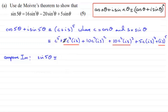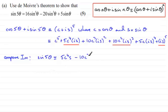For the first imaginary term we get 5c⁴s. For the i³ term — since i³ equals −i — we get −10c²s³. And for the i⁵ term — since i⁵ equals i — we just get +s⁵. So equating imaginary parts: sin(5θ) ≡ 5c⁴s − 10c²s³ + s⁵.